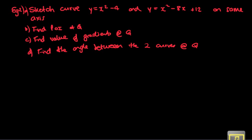Now we'll look at another question. This one says: sketch the curves y equals x squared minus 4 and y equals x squared minus 8x plus 12 on the same axes; find the point of intersection at Q; find the values of the gradients at Q; and find the angle between the two curves at Q. They're breaking it down into individual parts, though sometimes a question will just ask you to find the angle between two curves directly.